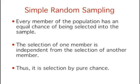One of these strategies is the use of simple random sampling. Simple random sampling occurs when every member of the population has an equal chance of being selected into the sample.